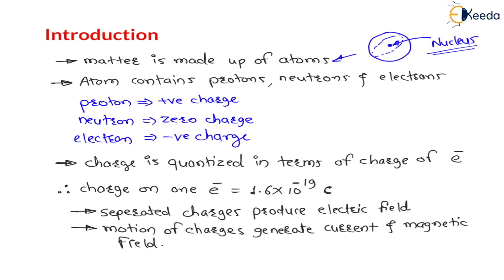But here our target is not to study all those concepts. Here we have to study Electrodynamics. And for proper understanding of Electrodynamics, we have to study the fields and different types of fields. Now, charge is quantized in terms of the charge of electrons — meaning the charge of an electron is used to specify charge.